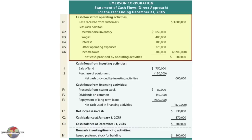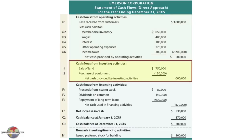Here you'll find the cash received from customers for sales of goods and services, amounts paid for merchandise, inventory, wages, interest, and so on, to come up with $800,000 cash provided by operating activities.